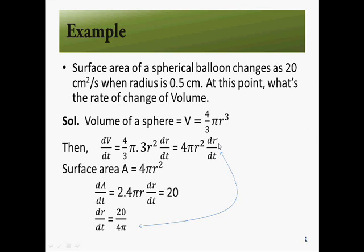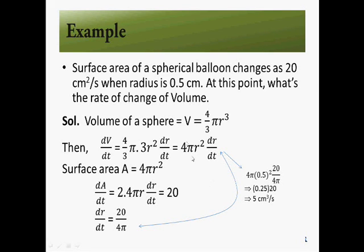With dr/dt = 20 over 4 pi and r = 0.5 centimeters substituted in, we get dV/dt = 5 centimeters cubed per second. That is the rate at which the volume is changing with respect to time.